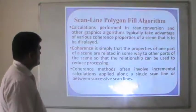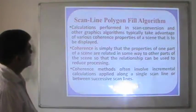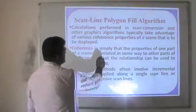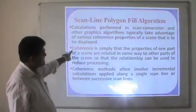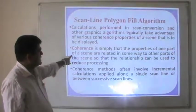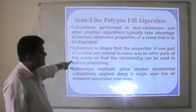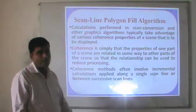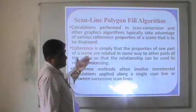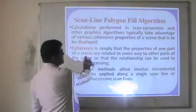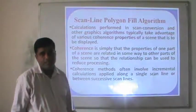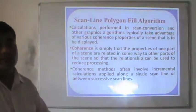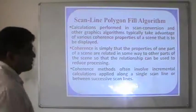Calculations performed on scan conversions and other graphic algorithms typically take advantage of various coherence properties of a scene to be displayed. Coherence simply means that one part of a scene is related in some way to the other parts of the scene, so that the relationship can reduce processing. We are trying to identify regions — also called region coherence — and find out which region is related to which other region.